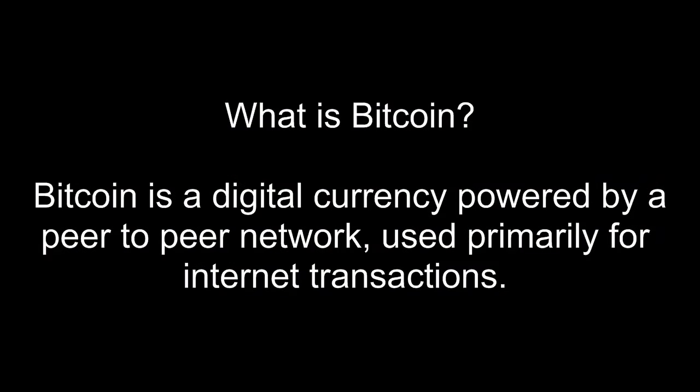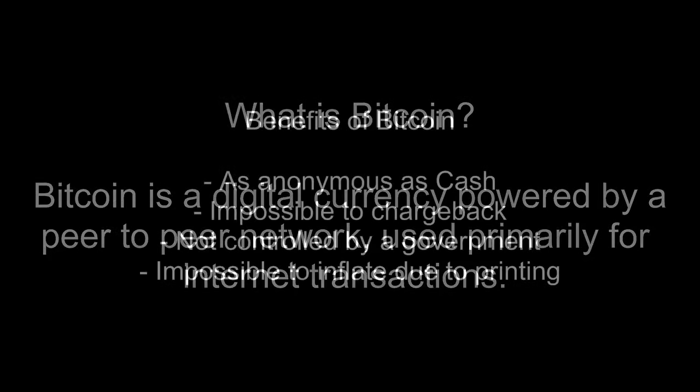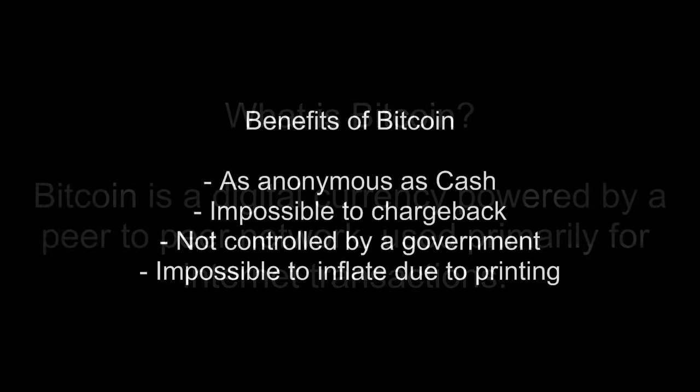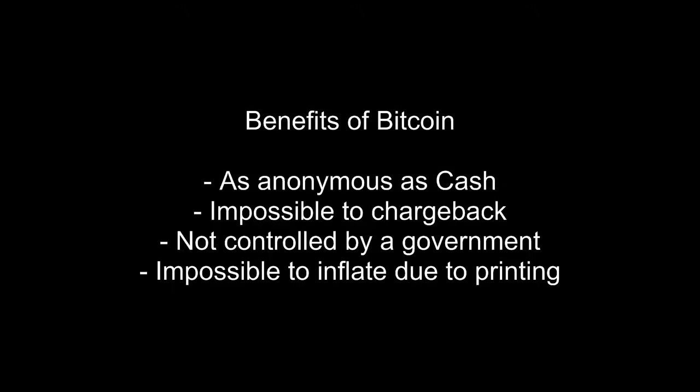So what is Bitcoin? Bitcoin is a digital currency powered by a peer-to-peer network used primarily for internet transactions. The benefits of using Bitcoin are that it's as anonymous as cash, it's impossible to charge back unlike PayPal or a credit card, it's not controlled by a central government, and it is impossible to inflate due to mass printing.